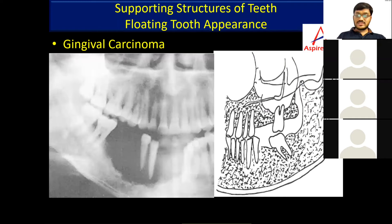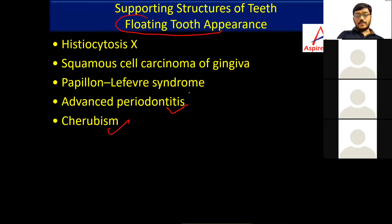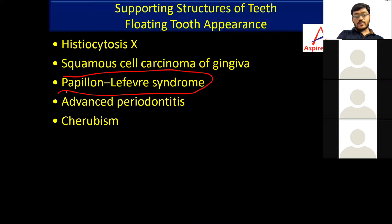Now you can see the floating tooth appearance. In the exam, this image was shown and you were asked to identify the appearance — floating tooth appearance or flipper tooth appearance — among four options. This appearance is known as floating tooth appearance, which can be seen in cherubism, advanced periodontitis, Papillon-Lefèvre syndrome, squamous cell carcinoma of the gingiva, and Histiocytosis X, which we have discussed previously.